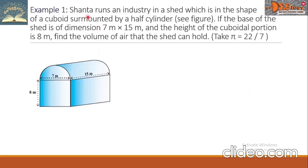Example 1. Shanta runs an industry in a shed which is in the shape of a cuboid surmounted by a half cylinder. The base of the shed has dimensions 7 meters by 15 meters and the height of the cuboidal portion is 8 meters. Find the volume of air that the shed can hold. Take pi equals 22 over 7.